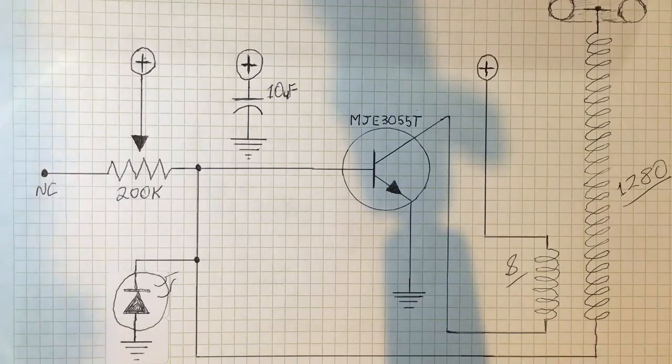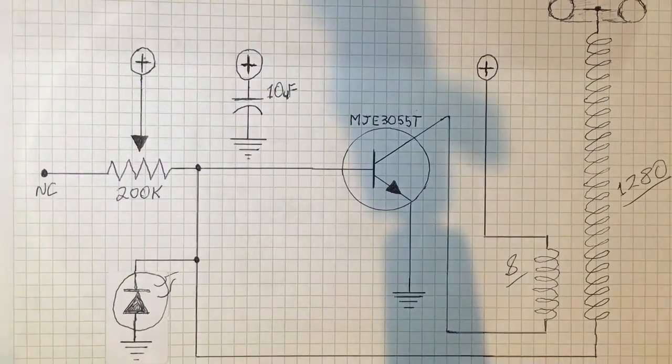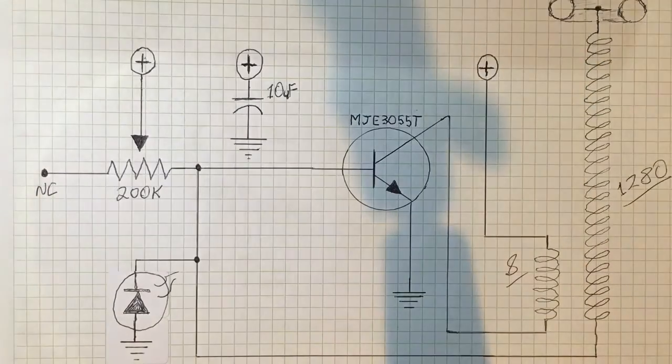So starting out with a very basic Slayer Exciter circuit with no bells and whistles at all. Sorry, you can see the shadow of the camera stand here.